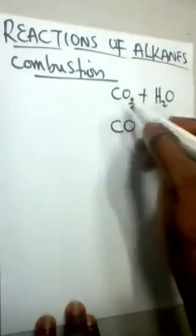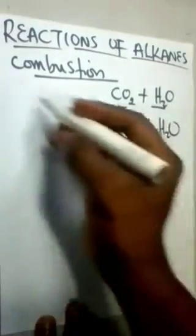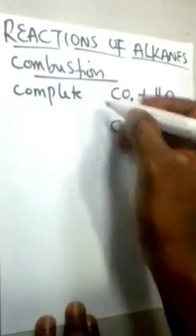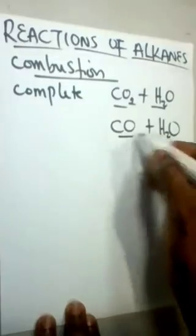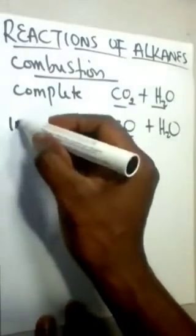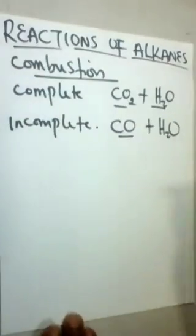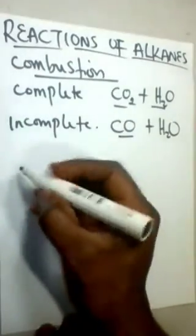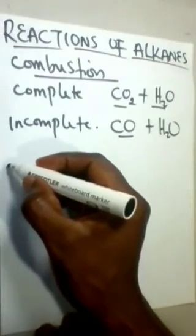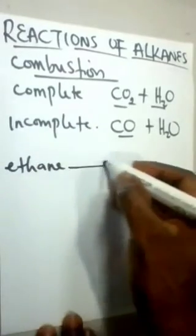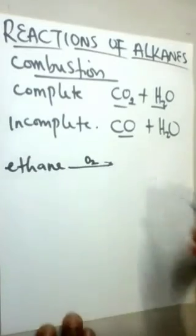When carbon dioxide is formed by the combustion of alkanes, we call this complete combustion. When carbon monoxide is released, this is called incomplete combustion. Incomplete combustion occurs as a result of less supply of oxygen. Let's take ethane to undergo these basic reactions.